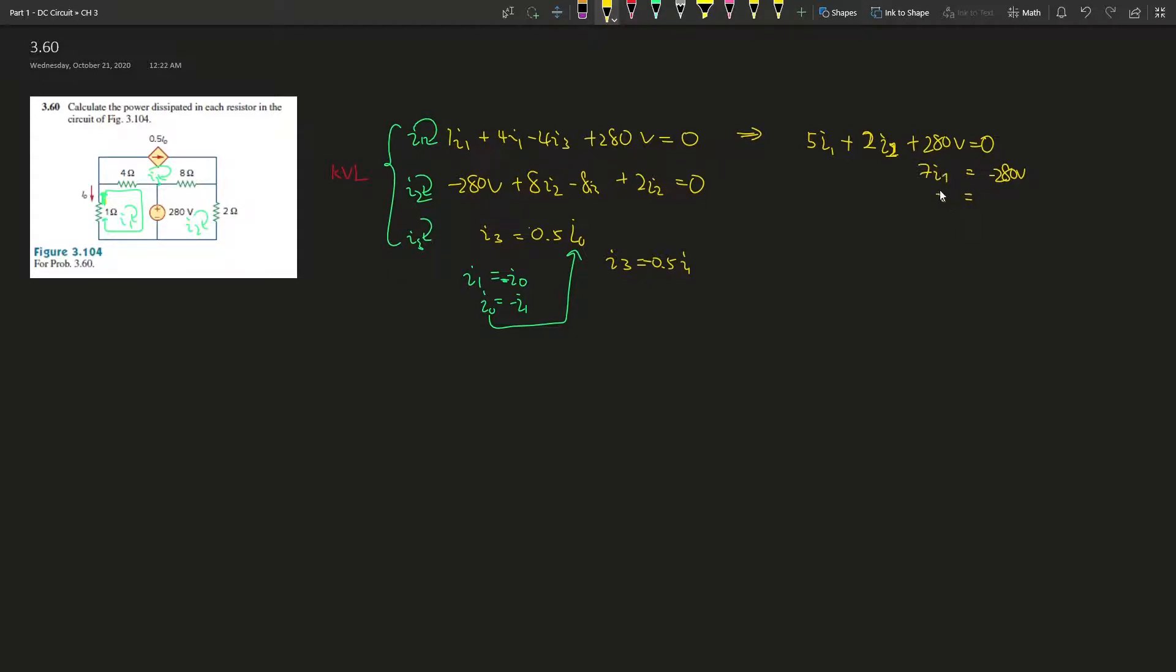If we find out what I1 is then we should be able to find I3. I3 is 20 amperes. And then I2, we can plug into this equation over here.